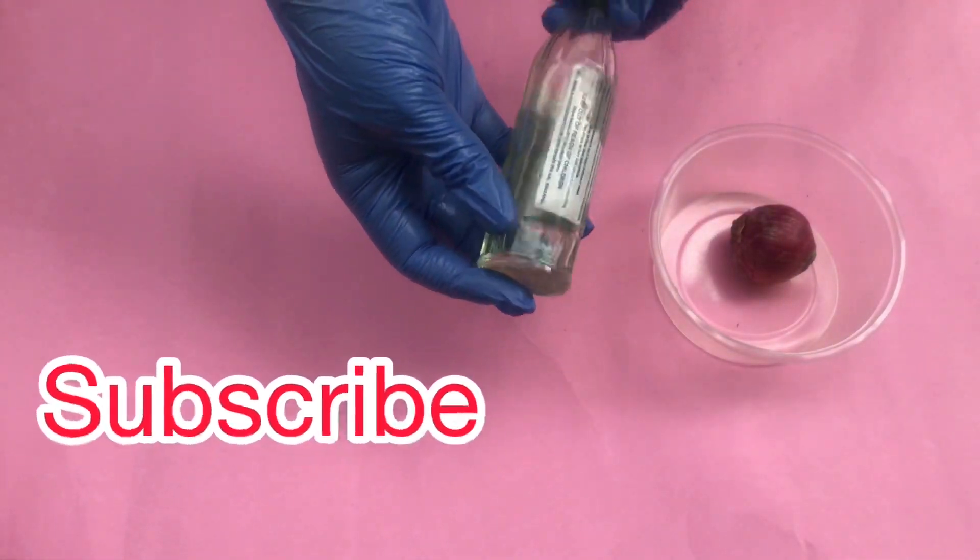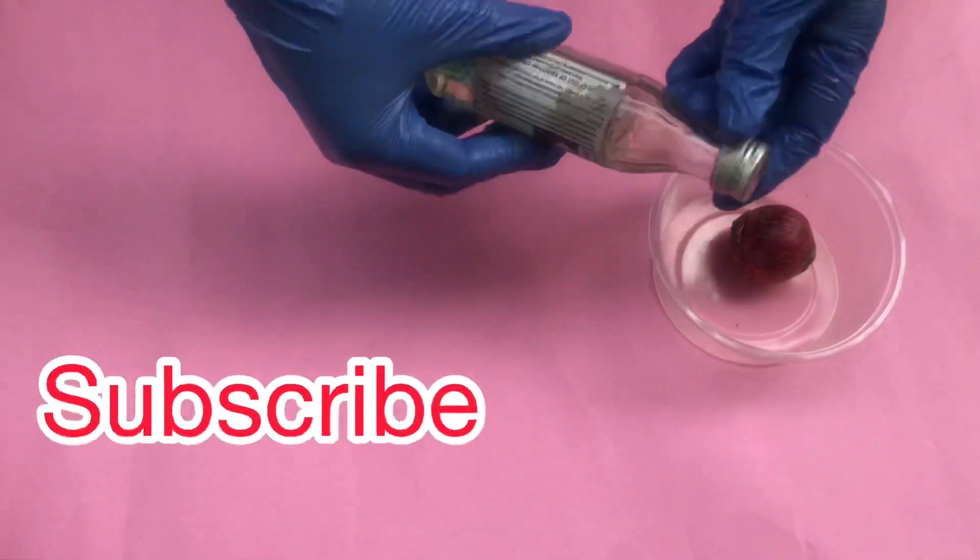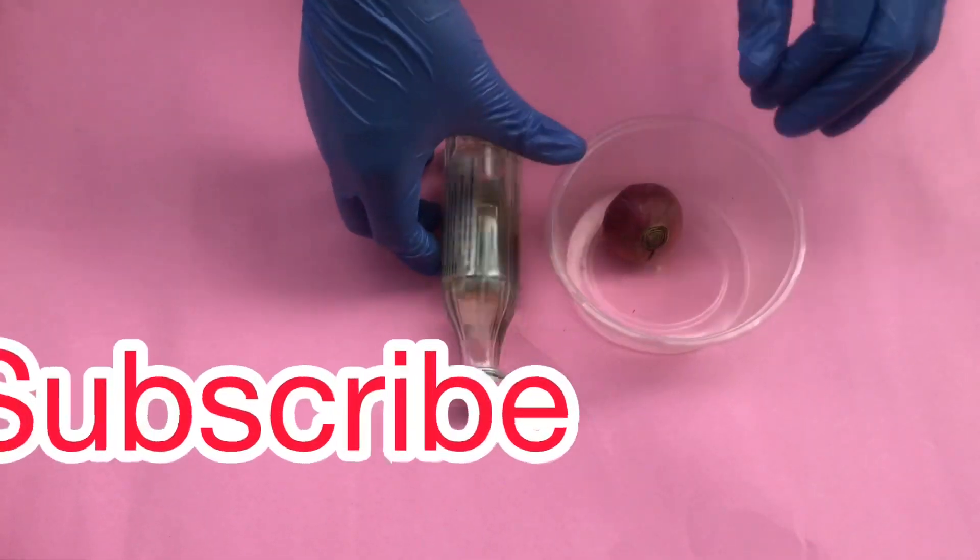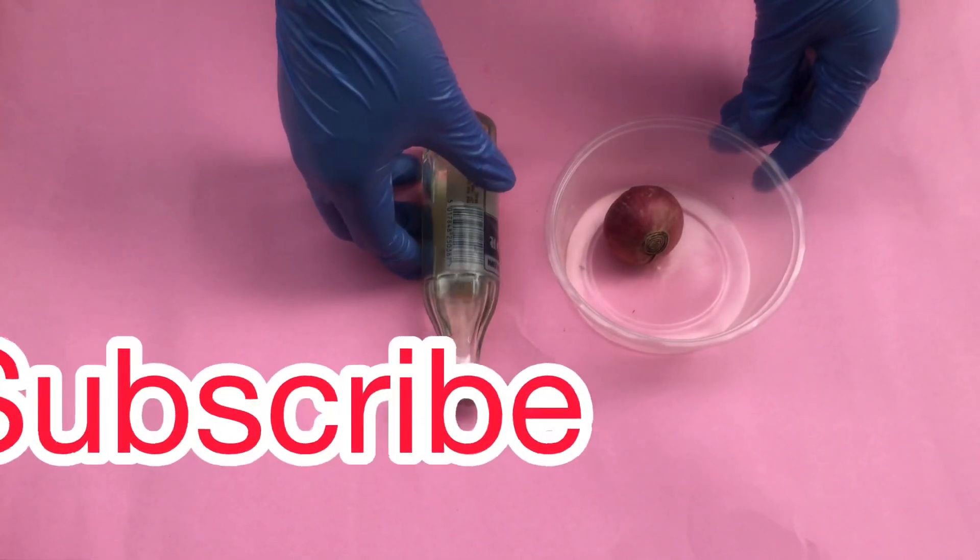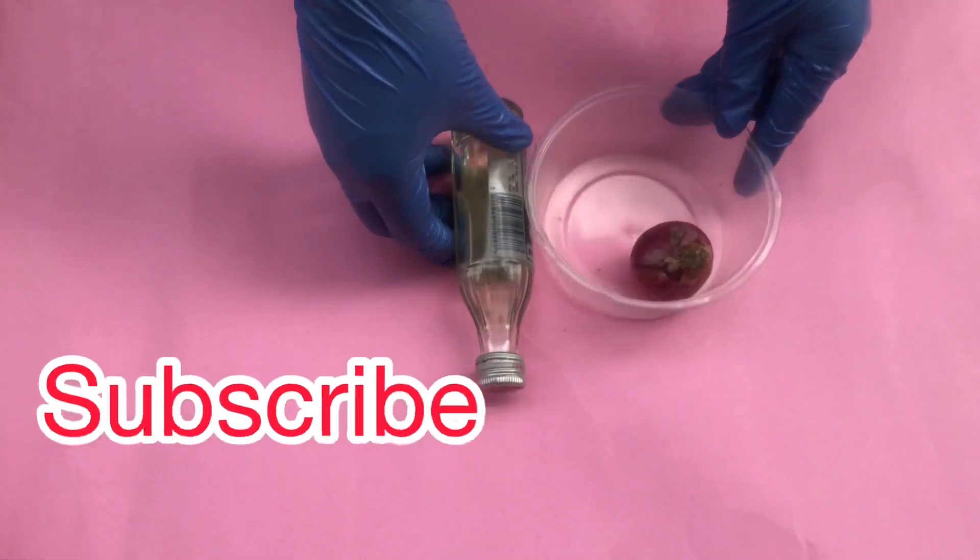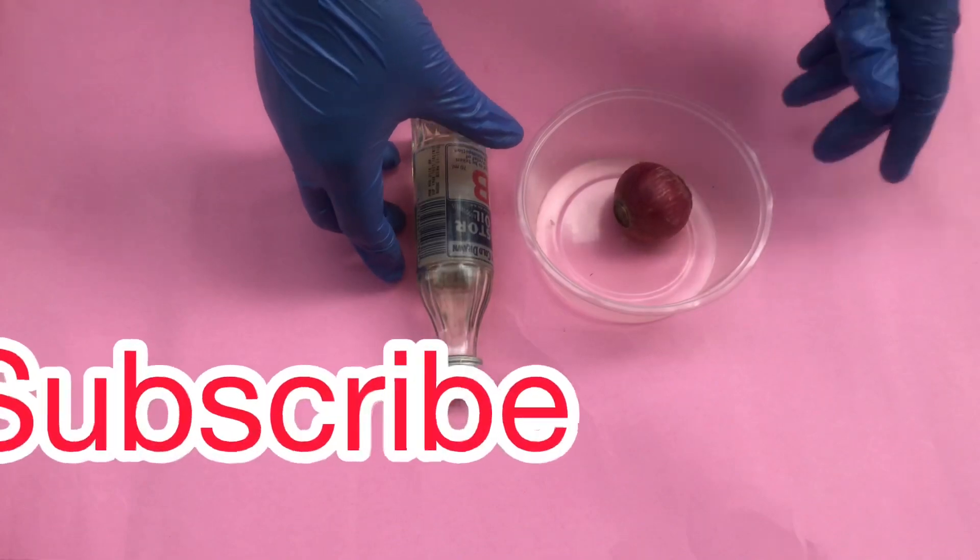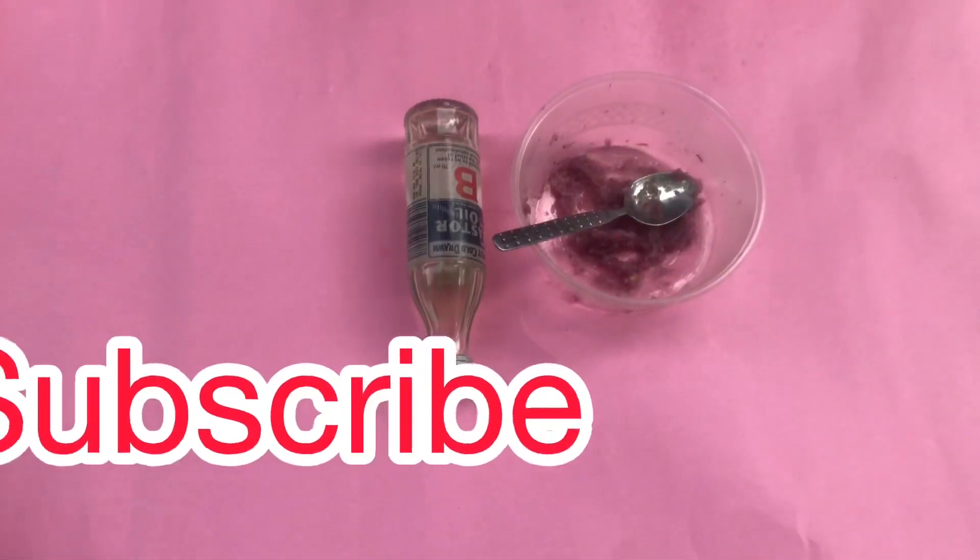And the next thing we'll be needing is our castor oil. Castor oil is great when it comes to growing the hair really long. So right now I'm going to peel off the skin of my red onion and I'm also going to grate it.